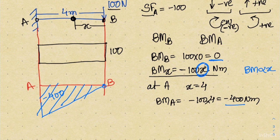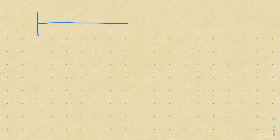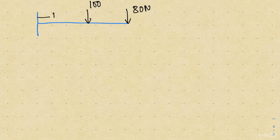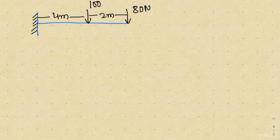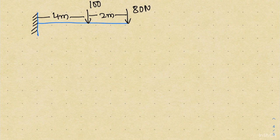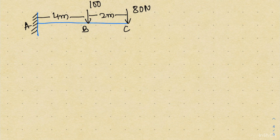That is how to make the bending moment diagram of a cantilever beam with a single point load. Now let's solve the next problem with two different loads. I have one load of 80 Newton and a second load of 100 Newton. The total length is 4 meters and the distance between the loads is 2 meters, making the points C, B, and A. I am intentionally using two loads rather than three so the understanding is clearer; once you understand the philosophy with two loads you can solve problems with more.